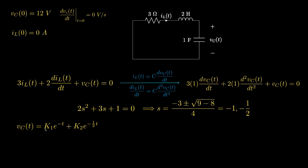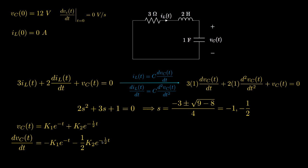To solve for the unknown constants K1 and K2, we need to determine the derivative of this voltage. Differentiating VC gives: negative K1·e^(-t) minus one-half K2·e^(-t/2).